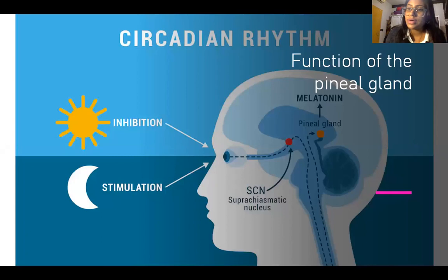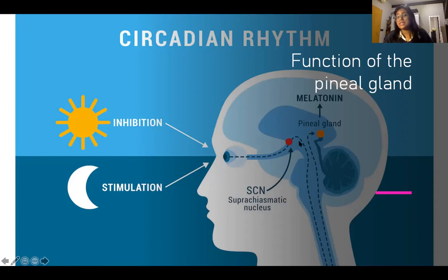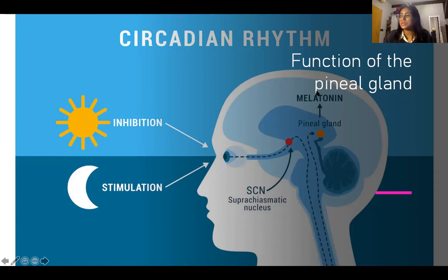The pineal gland has two major roles. The primary role is in circadian rhythm and the sleep-wake cycle, which is stimulated by darkness and inhibited by light. Light sensing nuclei within the eye send information to the suprachiasmatic nucleus, which sends information via sympathetic fibers to the spinal cord and then to the superior cervical nucleus. That information is relayed back up to the pineal gland, which causes release of melatonin, affecting sleeping and waking. Additionally, the pineal gland has some regulatory effects on sex hormones like LH and FSH.